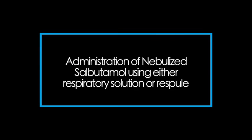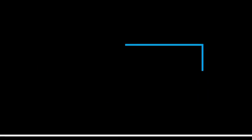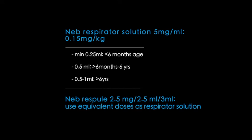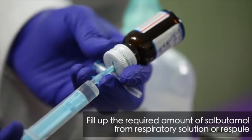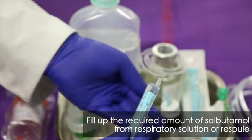Alternatively, administer salbutamol by nebulization using respiratory solution or respule. The nebulizer respiratory solution contains 5 mg of salbutamol per ml; the dosage for administration is 0.15 mg per kg. Taking age into consideration, the administered dosage varies as shown on screen. For nebulizer respule, use equivalent doses as for respiratory solution and fill up the required amount of salbutamol.